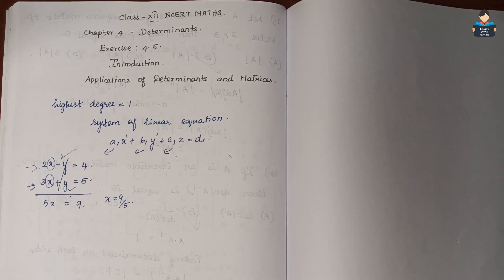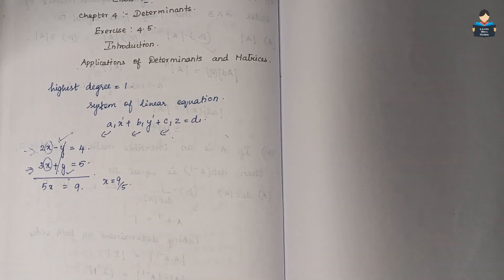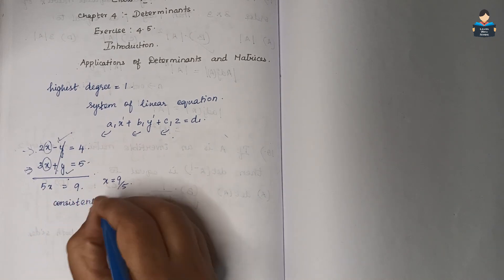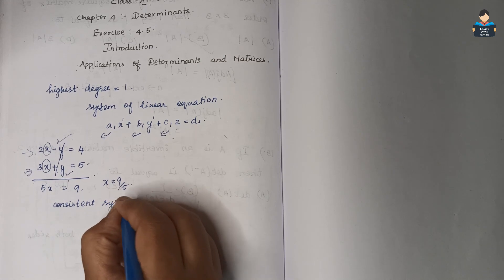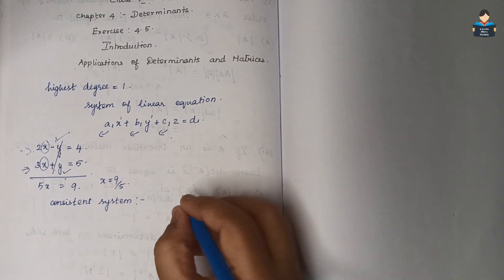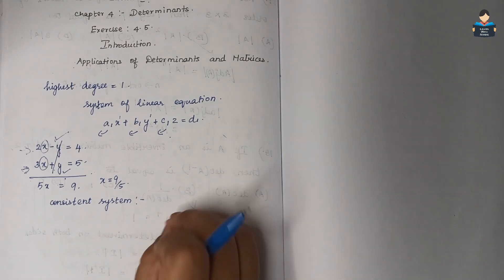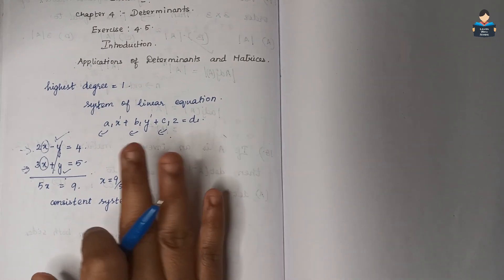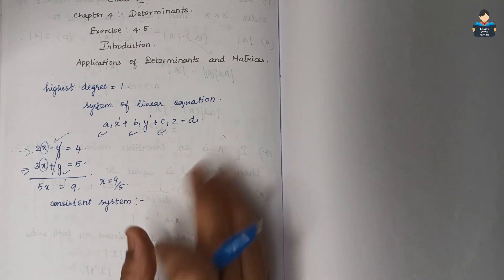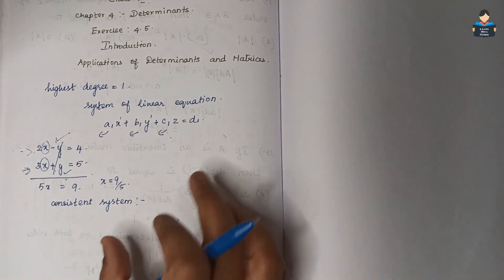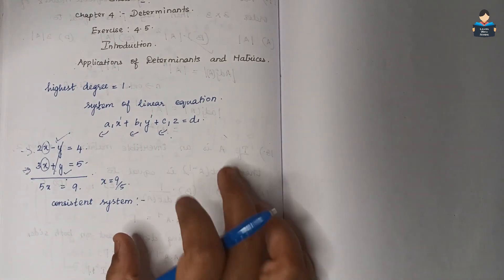Consistent and inconsistent — these terms are discussed in smaller classes. A system of equations is said to be consistent if its solution exists. The solution can be one solution or more than one solution — that is, a consistent system has at least one solution.